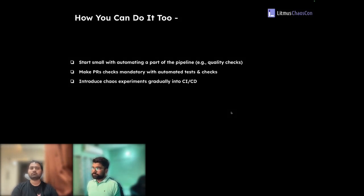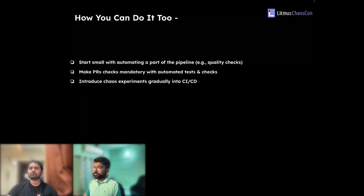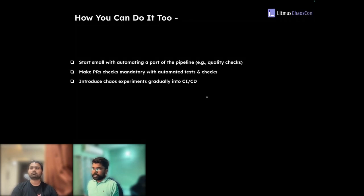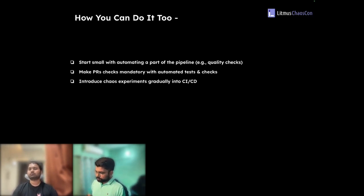Add one tool or one check at a time, fix the issues, and then proceed to the next. The second point is to make it mandatory — you've put in the effort to fix those issues, and you don't want them to come back. Making checks mandatory ensures that anyone raising a PR will see the issues immediately and can fix them in the same PR.